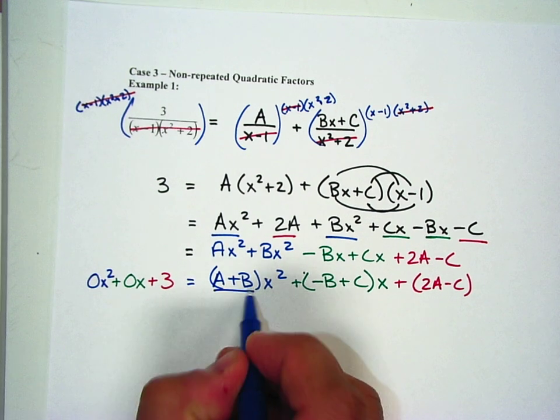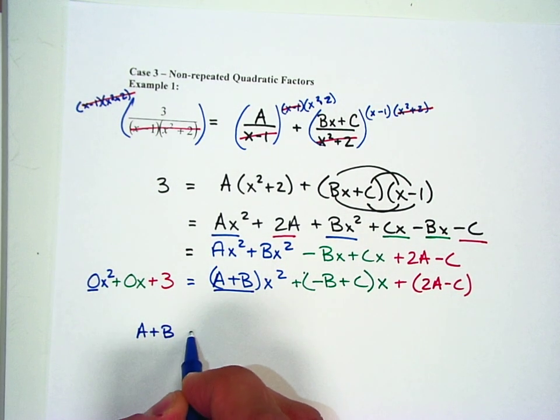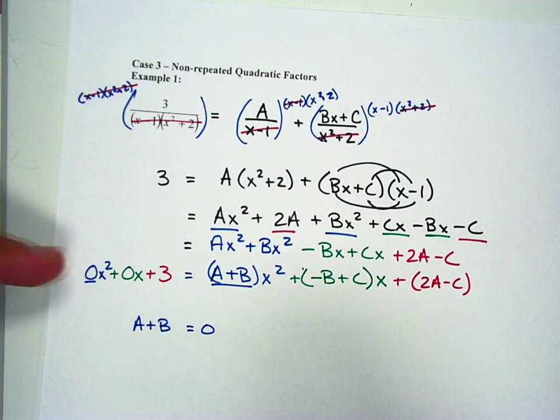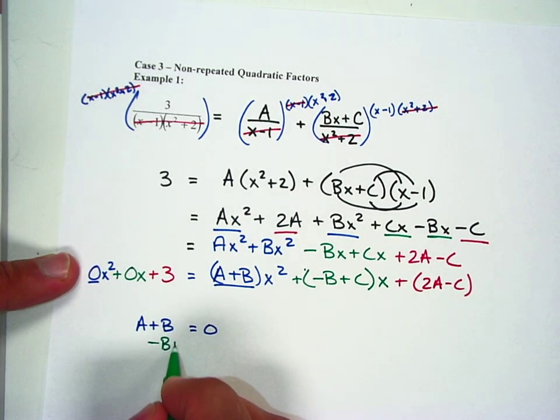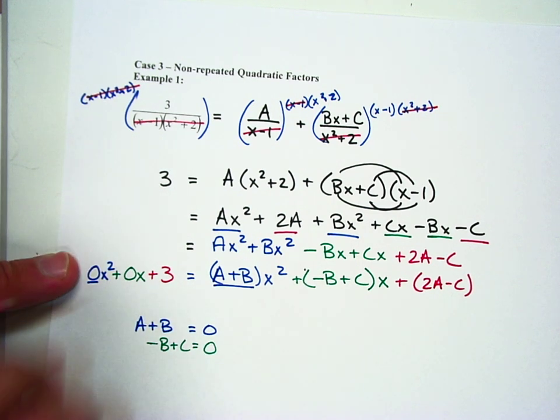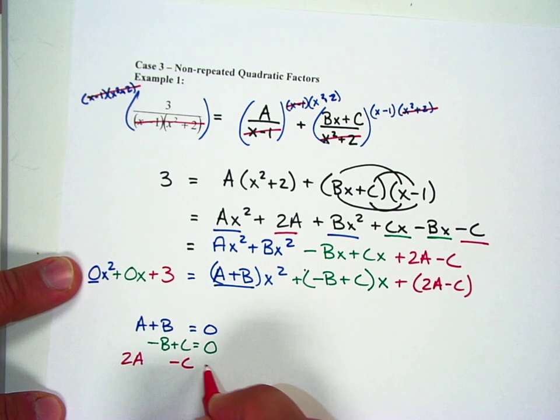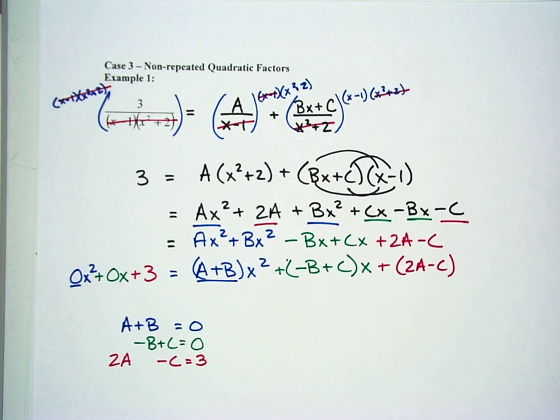So when I set the coefficients equal to one another, my first one is going to be A plus B equals 0. Then I'm going to have negative B plus C equals 0. And then my last one will be 2A minus C equals 3. All right?